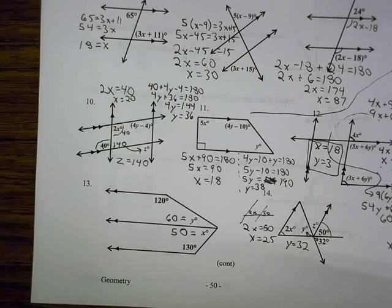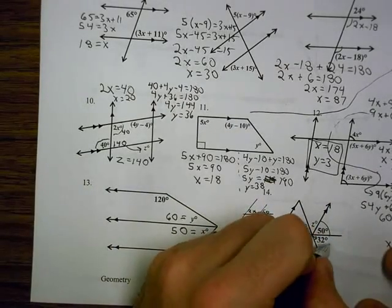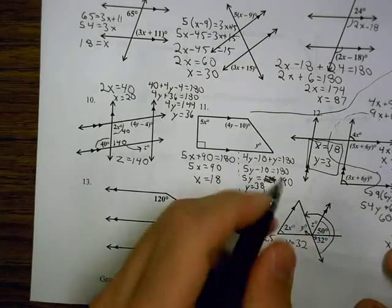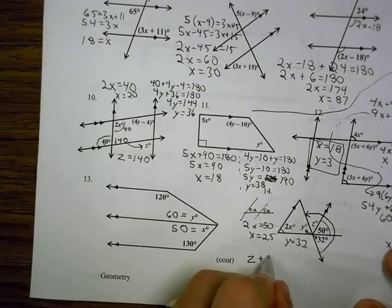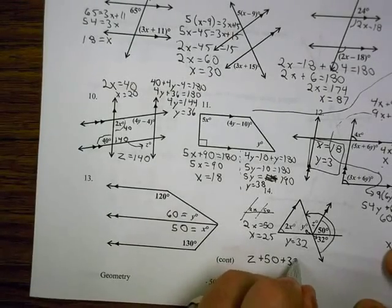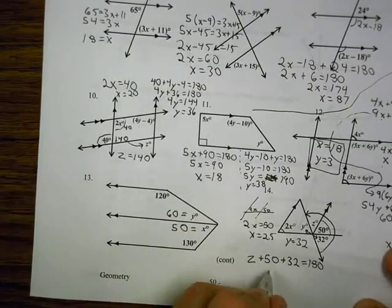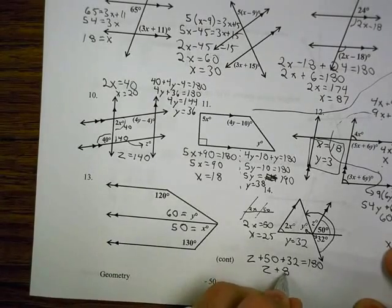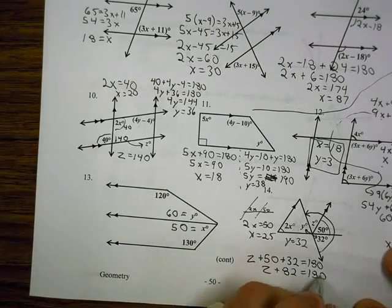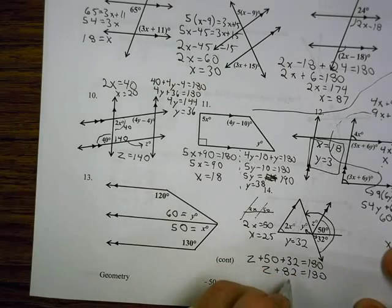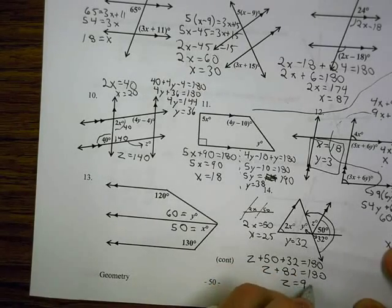I just need to find z, and there's a few different ways we could find it. I always like to look at the most direct way that I see, and I notice that all three of these angles add up to 180. So I could say z plus 50 plus 32 equals 180. z plus 82 equals 180. And we get that z is 98.